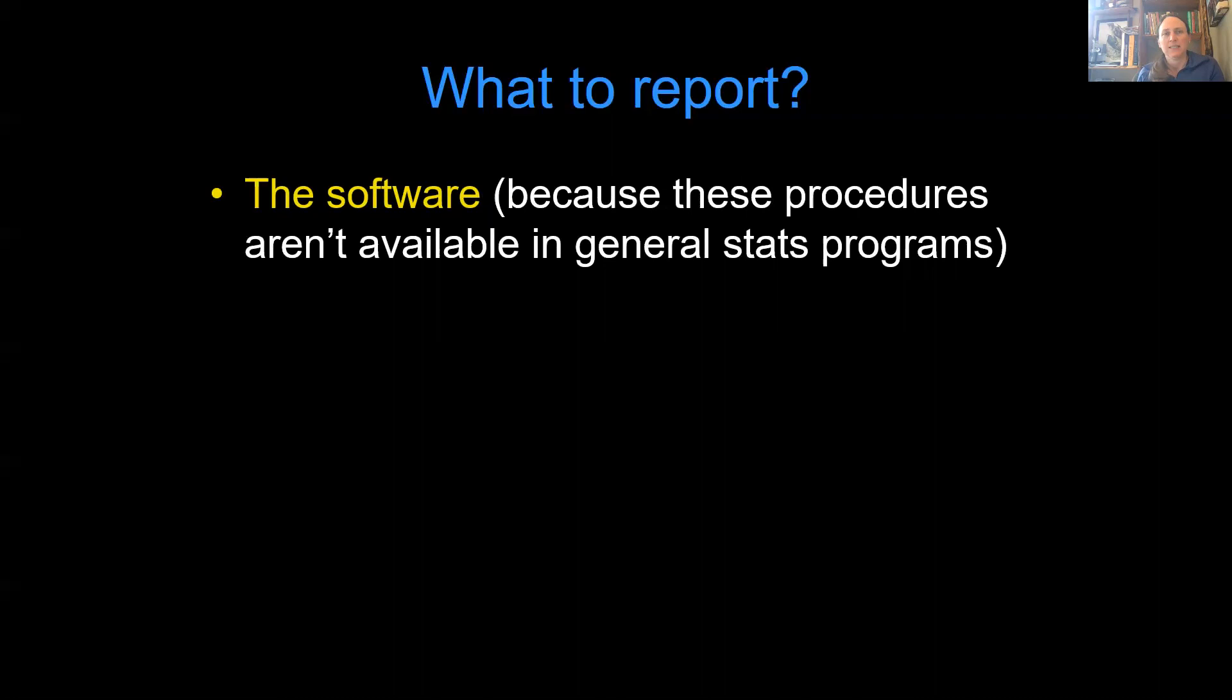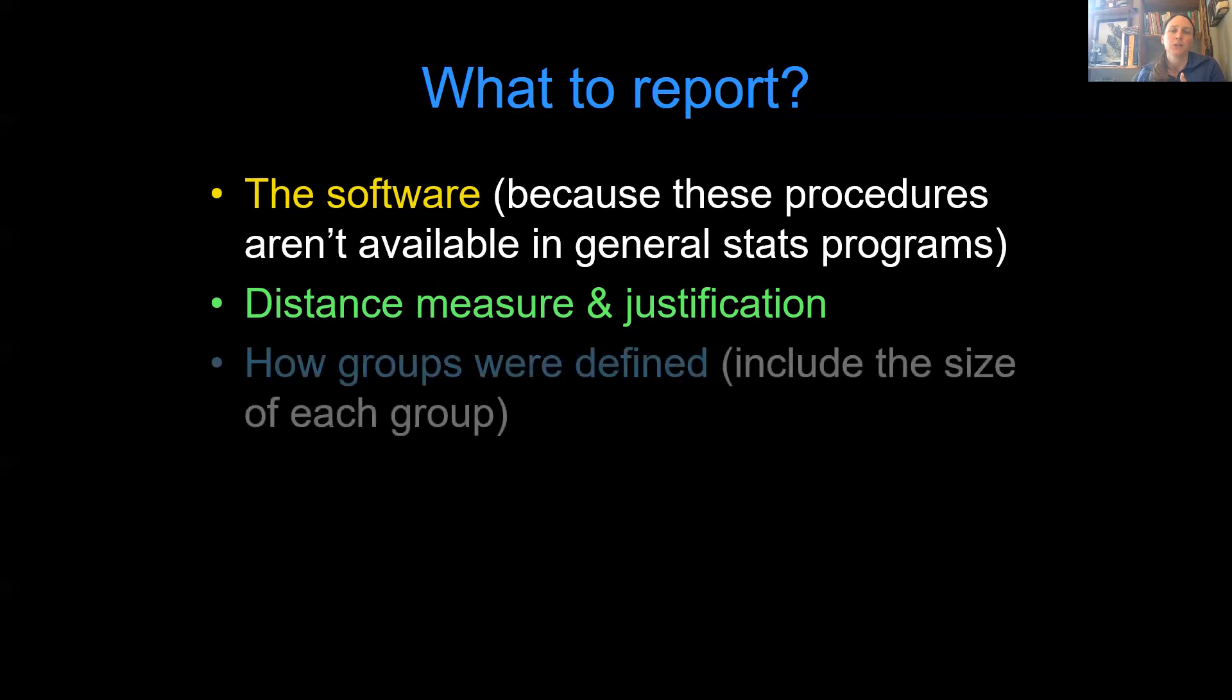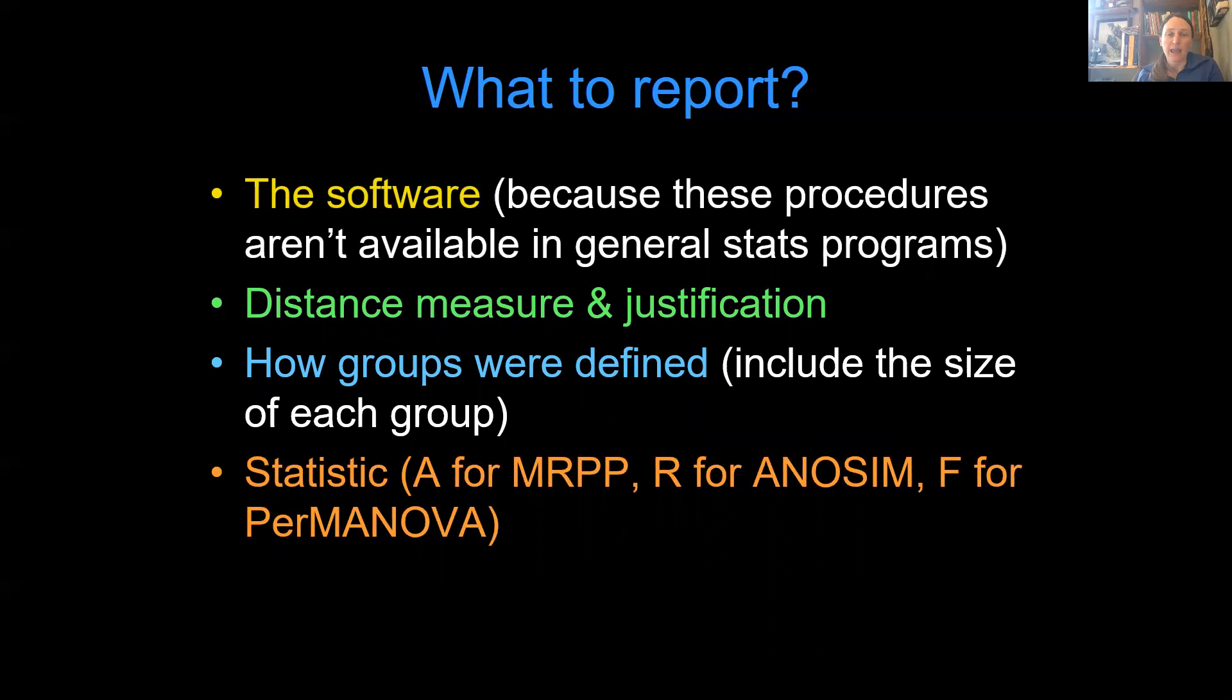All right. So what to report? Basically, you get this ordination, you run some statistics. When you're reporting, like say you're writing a paper, you should write out the software you used because these procedures are not available in general stats packages. You should write out what distance measure you used and provide some justification for that choice. You should tell people how your groups were defined and what your sample sizes were for each group. Then you should report your statistic, either your A for MRPP, your R for ANOSIM, or your F for PERMANOVA. And of course, you should report your P value. That's what you would use as evidence to reject the null hypothesis that the communities are the same.